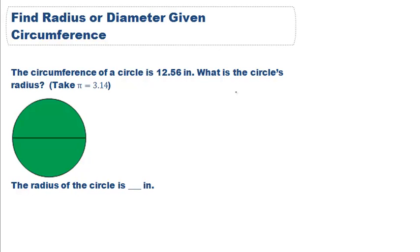It also asks us to use pi as 3.14. As a reminder, circumference is equal to pi times d, or pi times 2 times r.